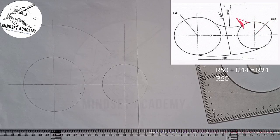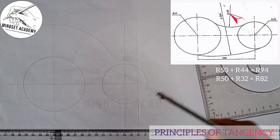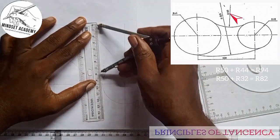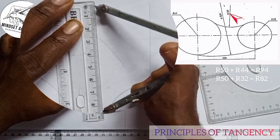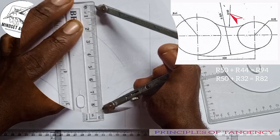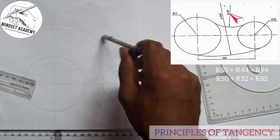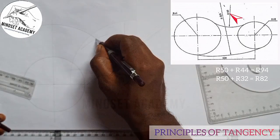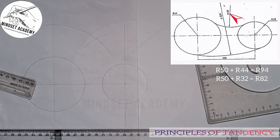Then I'll go to the other one also. I'm going to add 32 plus 50, which gives us 82. So I'm going to take 82 on my metal rule — this is 80 and this is 82. I'll place it at the other center and strike another arc. Where they meet will be the center of the circle connecting these two circles tangentially.